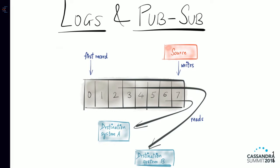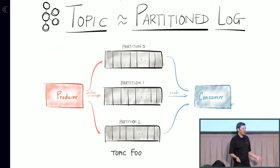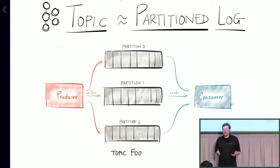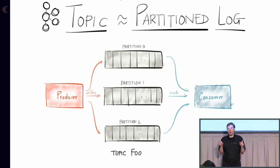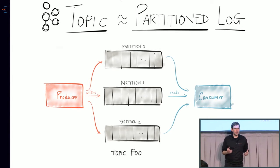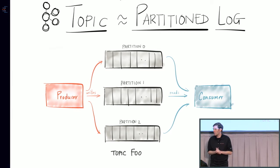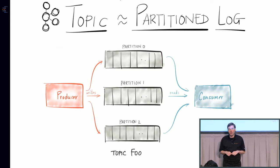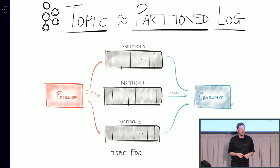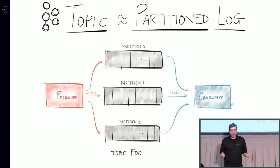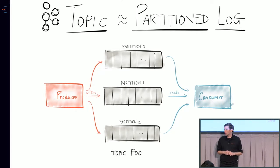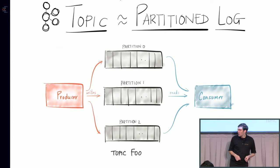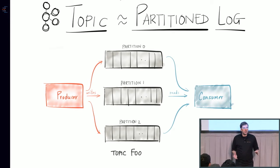Destination systems can read copies of the same data. To add scalability, we make a topic a partitioned log — rather than a single log, we have N of them, which is configurable. Producers choose which partition to send data to, typically using a key like a user ID to determine the partition automatically. Downstream consumers can consume from all partitions in parallel. Each partition is also replicated for data security.